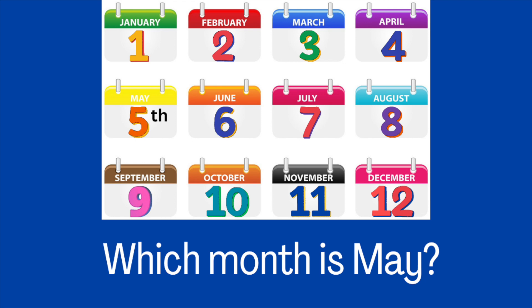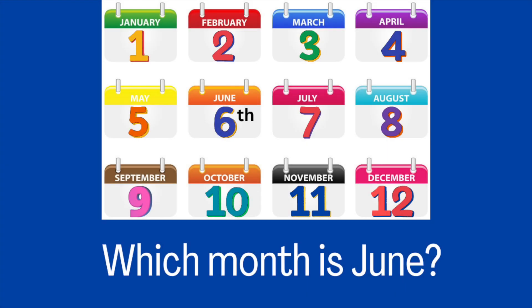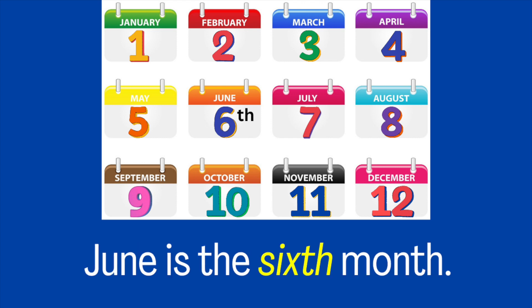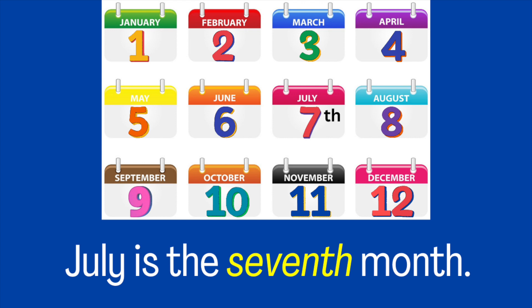Which month is May? May is the fifth month. June. June is the sixth month. Which month is July? July is the seventh month.